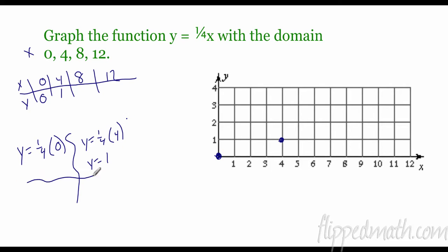So I come over here, go over four, up one, because that's the coordinates four comma one. My next point, Y equals one fourth of eight. What's one fourth of eight? Eight divided by four is two. So go over eight on my X, up two on my Y. And last but not least, Y equals one fourth of 12. One fourth of 12 is three. So I plug that in, go over 12, up three.